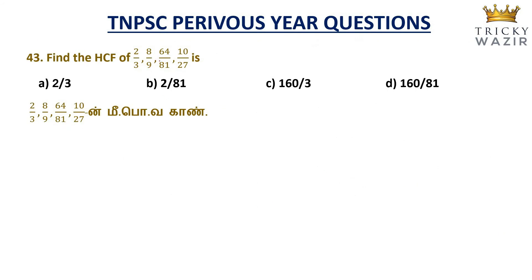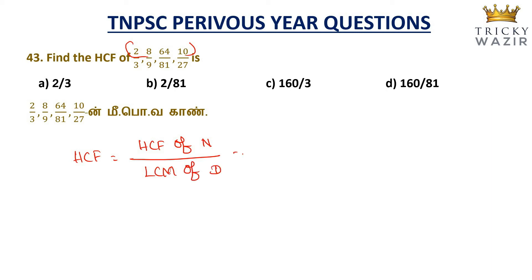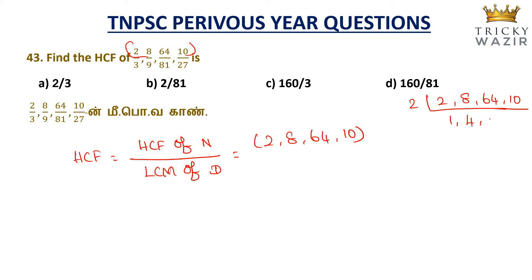Next sum: Find the HCF of 2/3, 8/9, 64/81, and 10/27. For fractions, HCF equals HCF of numerators divided by LCM of denominators. The numerators are 2, 8, 64, 10. Their HCF is 2.